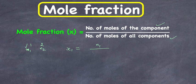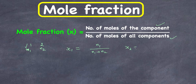x1 is equal to n1, which is the number of moles of component one, divided by the number of moles of all components — so that will be n1 plus n2. Similarly, the mole fraction of component two is x2, equal to n2, which is the number of moles of that component.